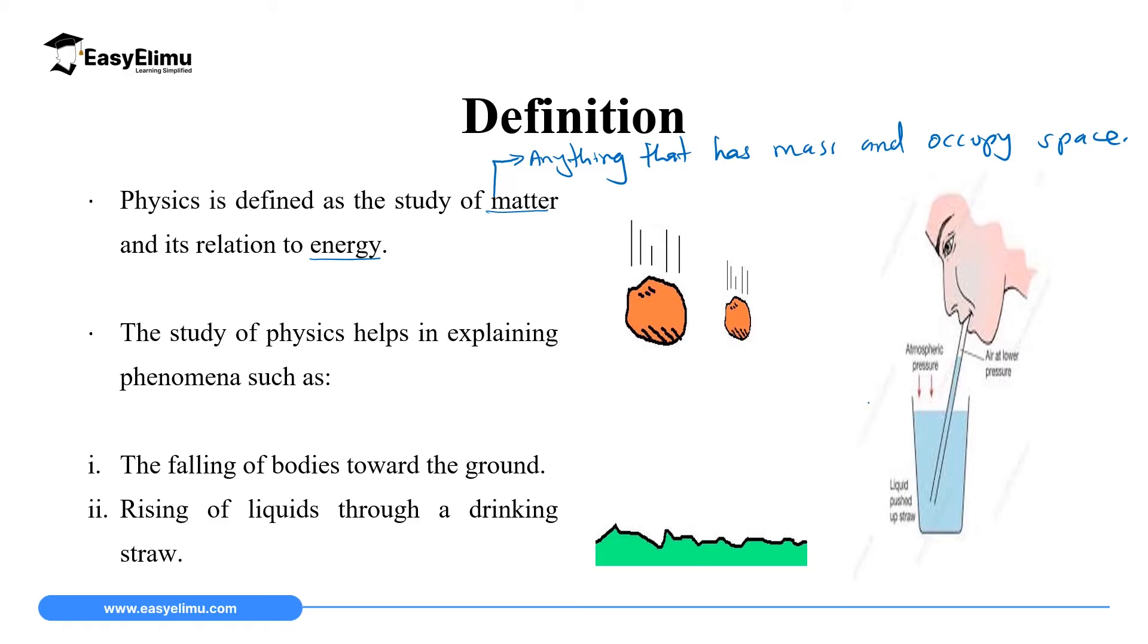We said matter exists in three main states. We have solid, we have liquid, and we have gas as the three main states of matter. Therefore, a good student like you can come up with another definition of physics and say physics is the study of solid, liquid, and gas, and its relation to energy.